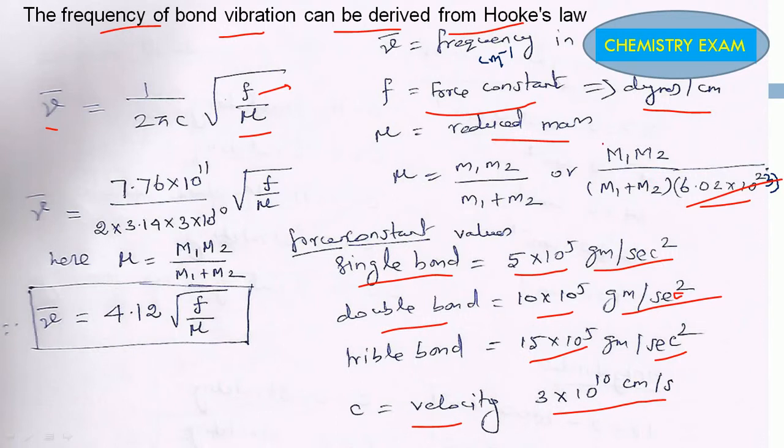We can use this μ value, and the Avogadro number goes in the numerator. We can simplify that. The Avogadro number value 6.02×10^23 means the square root of 6.02×10^23 gives us 7.76×10^11 divided by 2π times 3.14. C is the velocity 3×10^10.